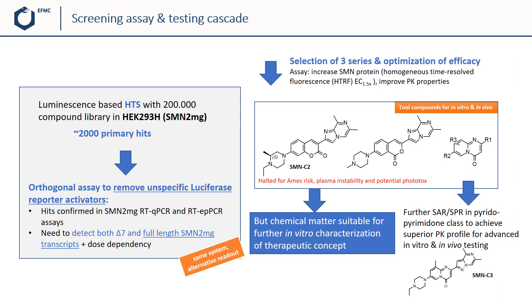With this fairly robust assay system in the form of a human cell line established, the research team could perform a screen of quite a number of compounds — around 200,000 compounds were evaluated. This resulted in around 2,000 primary hits, which were then further triaged. First, an orthogonal assay was performed to remove those compounds which would just unspecifically lead to a signal by activating the luciferase directly, but not through proper splicing modulation. This was performed by analyzing the same cell system but with a different readout, a common way for orthogonal assays.